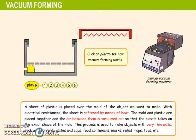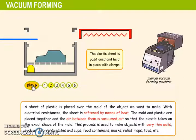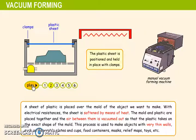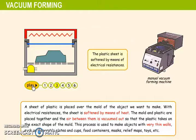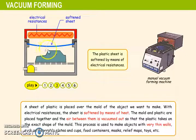Vacuum forming. A sheet of plastic is placed over the mold of the object we want to make. The mold is placed inside the machine. The plastic sheet is positioned and held in place with clamps. The plastic sheet is softened by means of electrical resistance — here you can see the electrical resistance in the sheet.